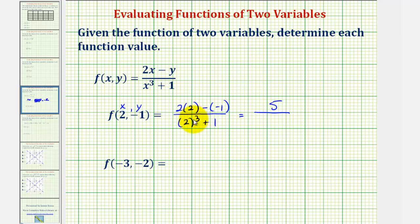Our denominator would be two to the third, that's eight plus one, that's nine. So f of two comma negative one equals five ninths.